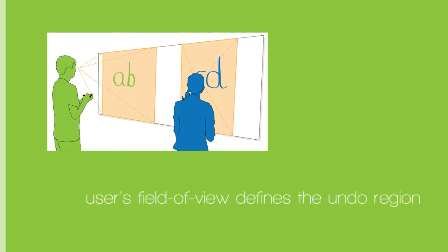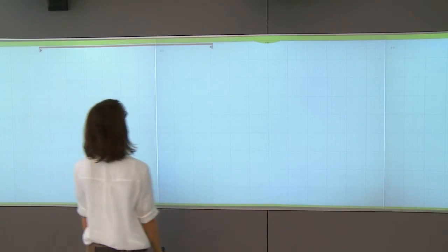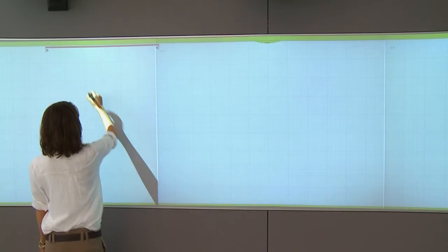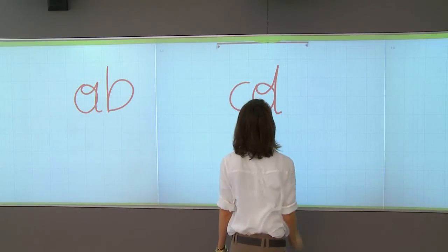In the field of view technique, the undo region is based on the area that the user physically sees. The body position of each user is tracked by a Microsoft Kinect. Depending on the position and distance, the field of view is estimated and used as an undo region.